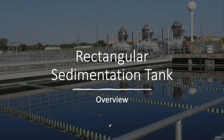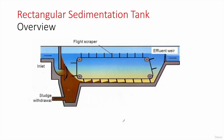We will begin with an overview. This is a basic drawing — actually a section — of a rectangular sedimentation tank. As you can see, the water enters through an inlet structure, usually a baffled wall, and enters uniformly into the sedimentation tank with minimal disturbance. The particles are then able to settle down by gravity.